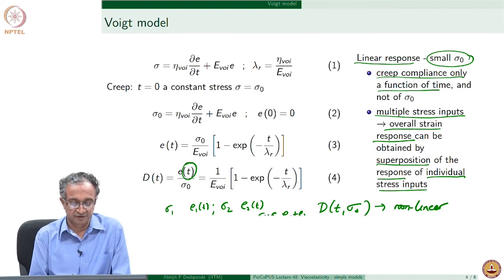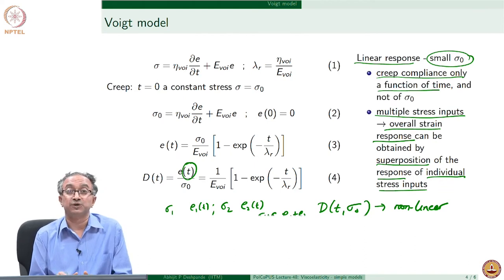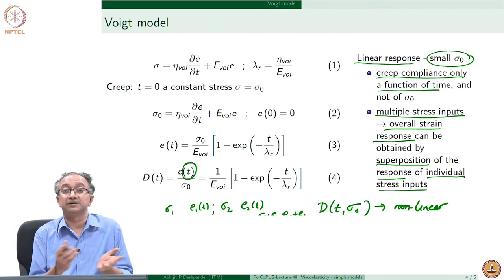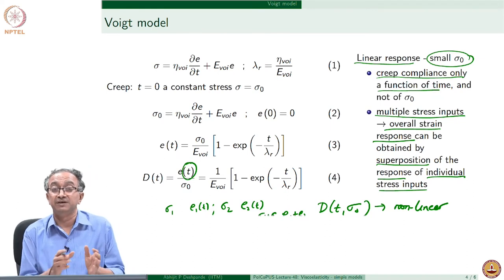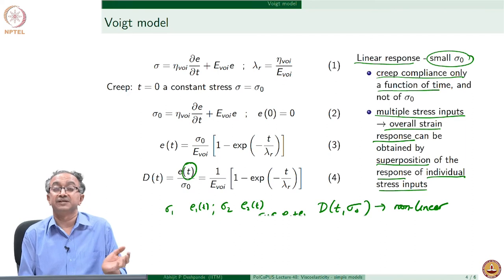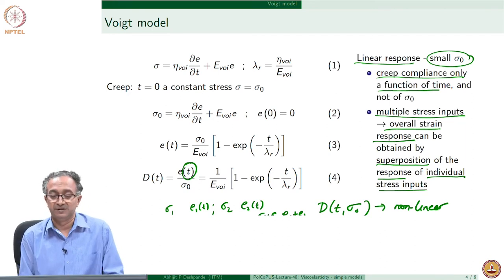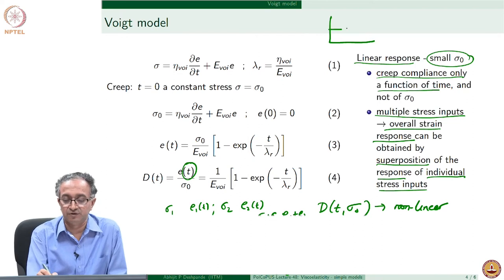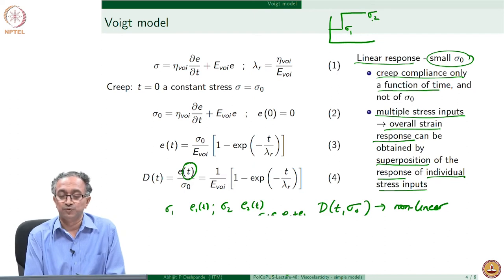If σ₂ is double σ₁, then ε₂ will also be double everywhere — both are functions of time, and their sum is also a function of time, but superposition of responses is possible. I can also apply σ₁ for a certain amount of time and then apply σ₂ and again do superposition: the response for the first period is based entirely on σ₁, and then later I can add the response due to σ₂. This superposition is possible because of the linearity of the response.